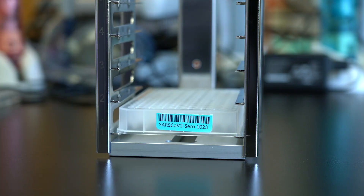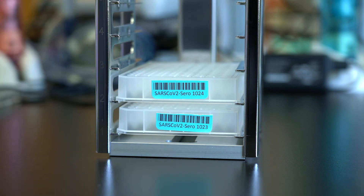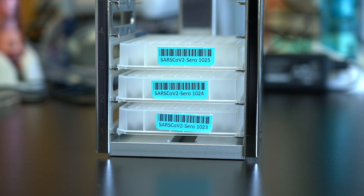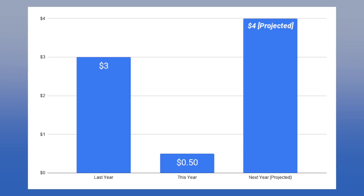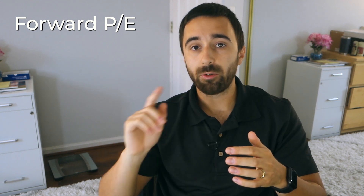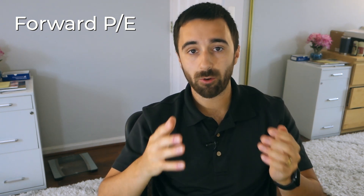Most websites show PE value based on the past year of earnings. But in a situation like a global pandemic, where almost every company's earnings are affected, this doesn't give an accurate picture of earnings potential. For example, if a company earned $3 last year, is earning $0.50 this year, but is expected to earn $4 next year — and we know the $0.50 is due to a temporary condition — it wouldn't make sense to base your valuation on that. We can look at projected earnings and apply our PE value to determine its future upside, sometimes called the forward PE ratio.